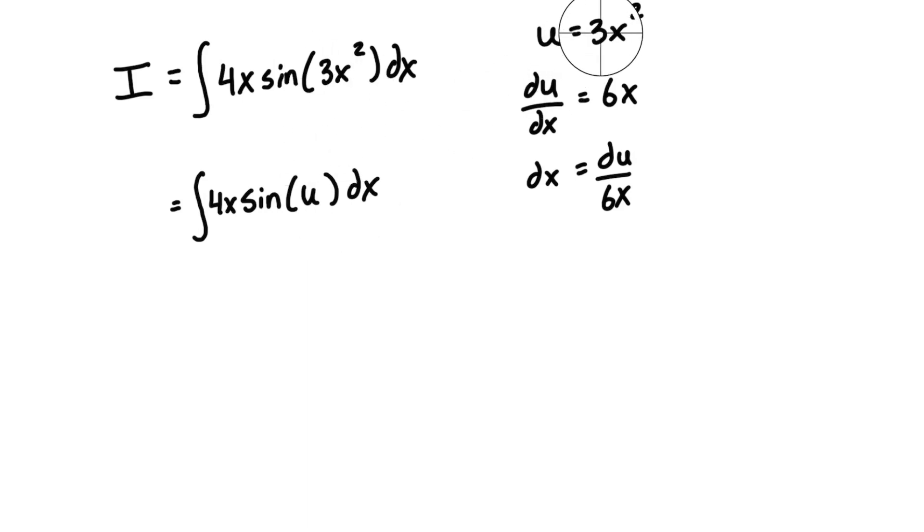Now we have an expression for u, but we also have an expression for dx. So let's replace what we have dx here with what we have figured out here based on our function u. So this becomes, this integral is equal to 4x sine of u, and we replace dx with du over 6x. Now what we can do is we can cancel out some things. We have an x here that conveniently cancels with that x, and the 4 over 6 ratio we can reduce to two-thirds and bring it out. So we're going to get two-thirds times the integral of sine of u du.